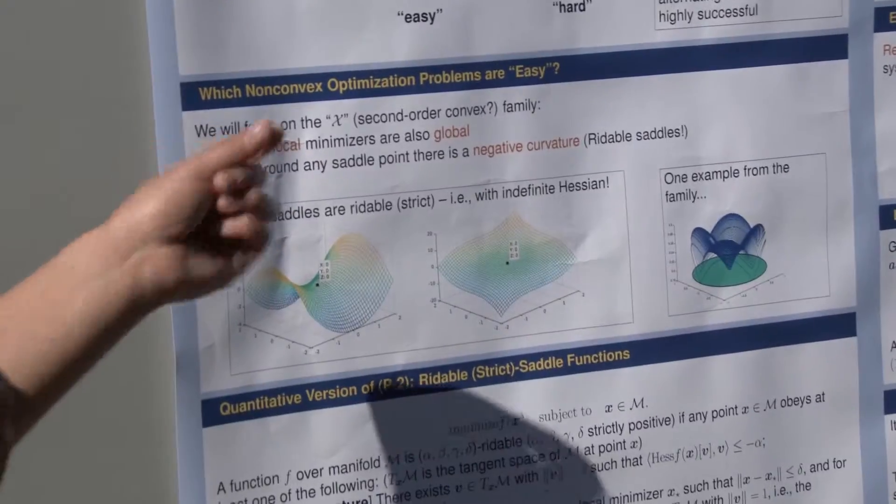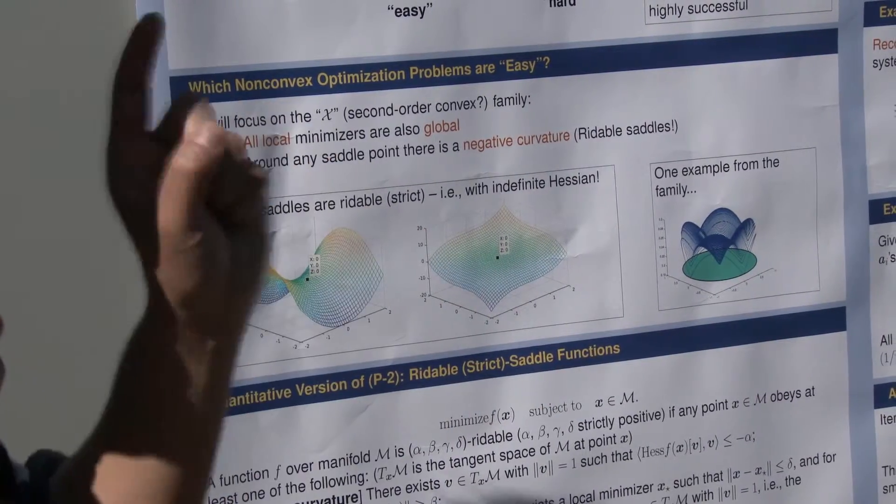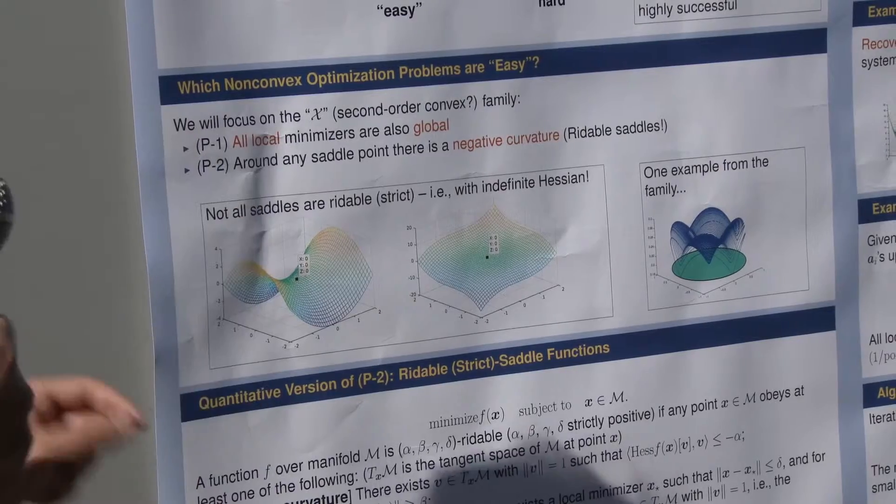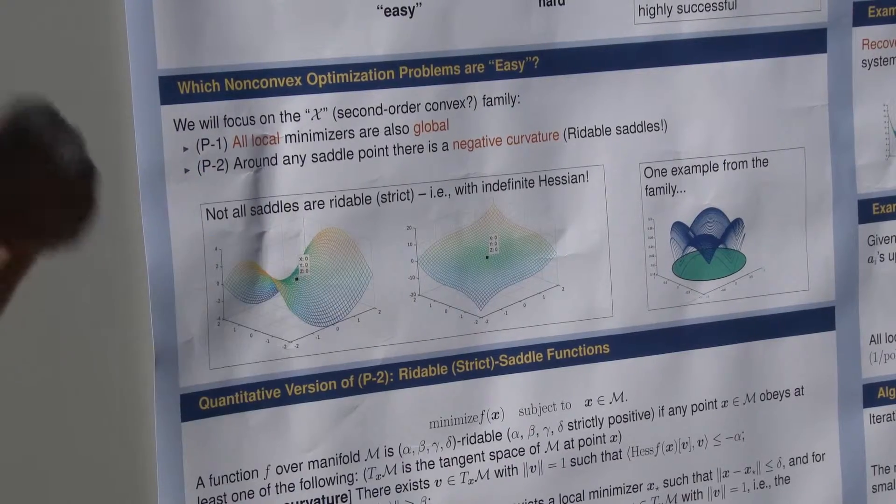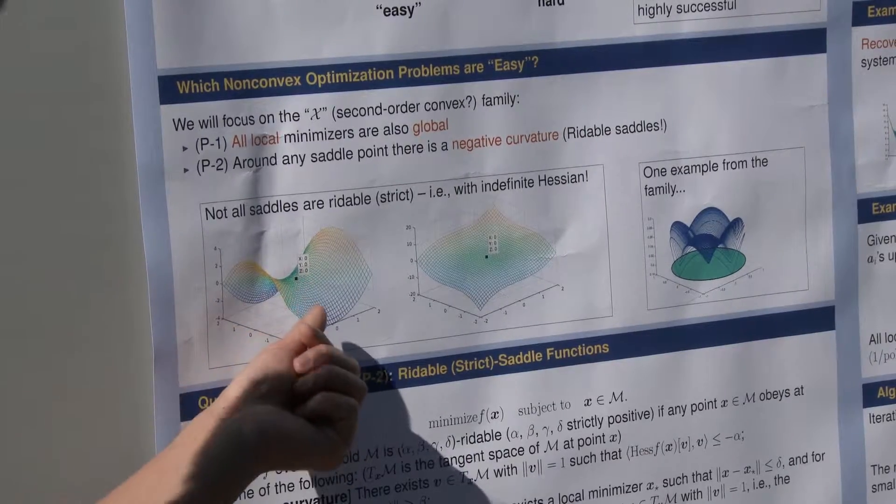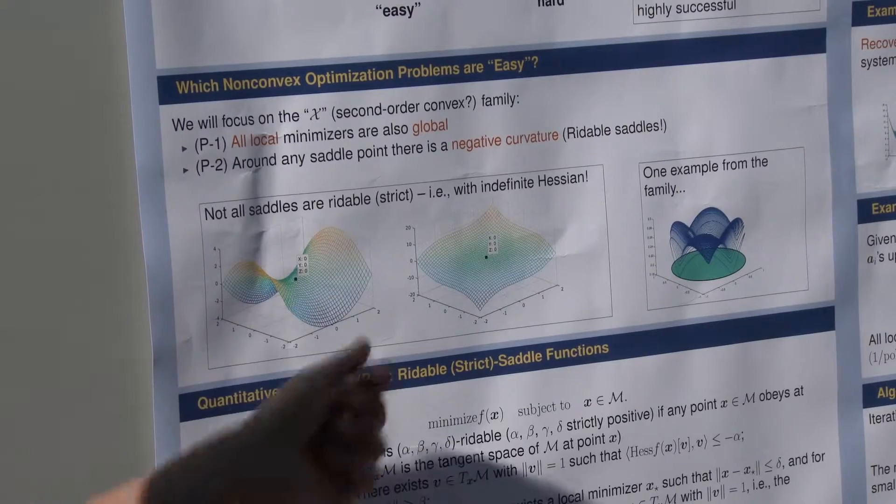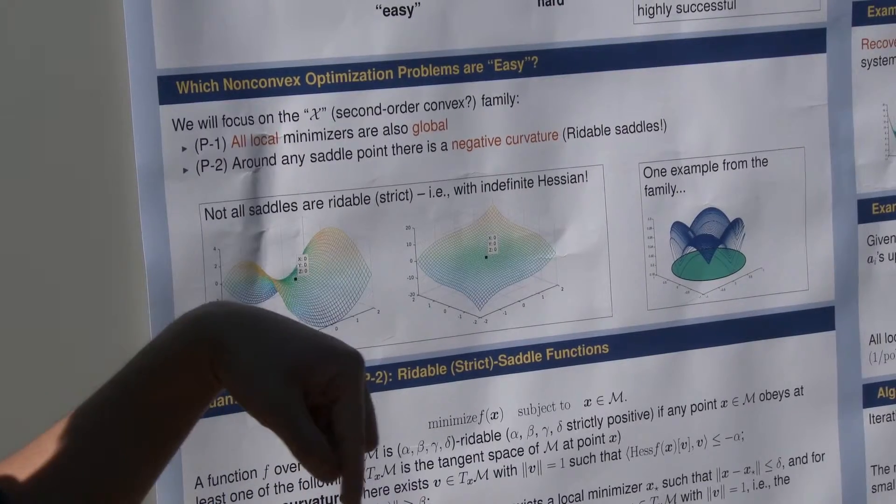First of all, all local minimizers should be global. That's the first property that we look at. And the second rule, all saddle points should have this kind of nice, typical saddle shape. That means you have a direction that the function has a negative curvature.